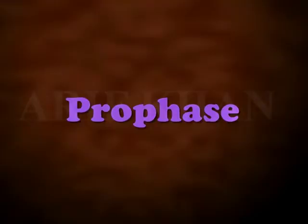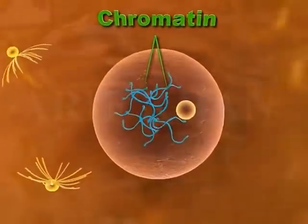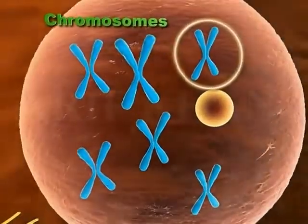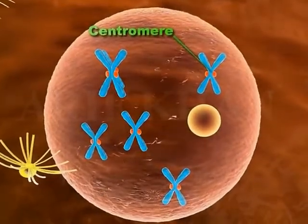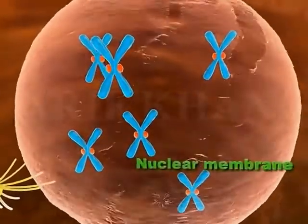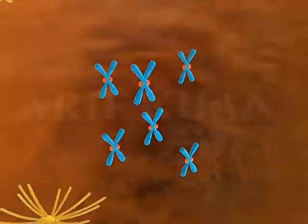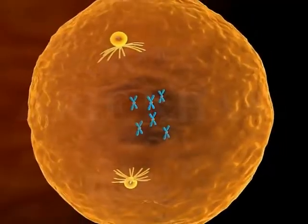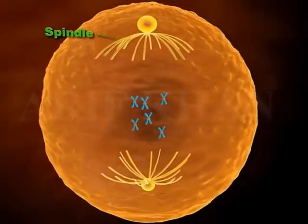Prophase. During prophase, the chromatin condenses and becomes short and thick to form chromosomes. Each chromosome has two sister chromatids joined together at the centromere. The nucleolus disappears and the nuclear membrane starts to break down. The centrosomes, each with a pair of centrioles, move apart to the opposite poles forming a spindle between them.